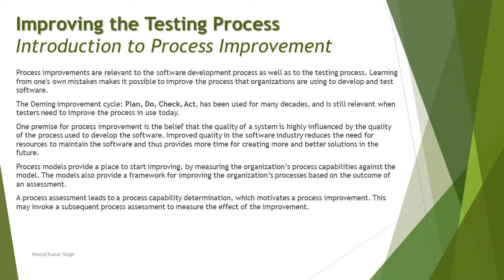Process models provide a starting point for improvement by measuring the organization's process capability against the model. The model has certain standards to be met, and you map your practices against the model's guidelines to see how well you are aligned. If you see a deviation, you try to improvise that part in order to improve your process. Adhering to those standards from a particular model is what you call improvising your test process, and you keep optimizing it as long as you are meeting the expectations of the guidelines.